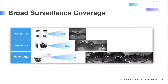This image displays the built-in IR illuminators of each model with effective distances. With the built-in smart IR feature, you'll be immune to whiteout. The CC is effective up to 50 feet, the MS9390 up to 65 feet, and the MS9321 up to about 100 feet.